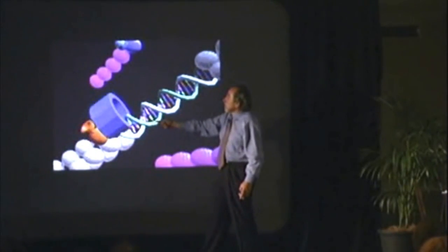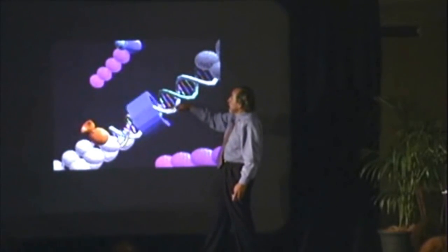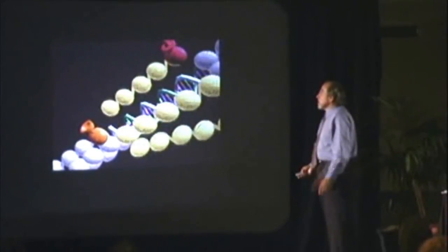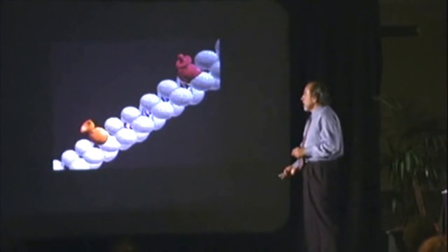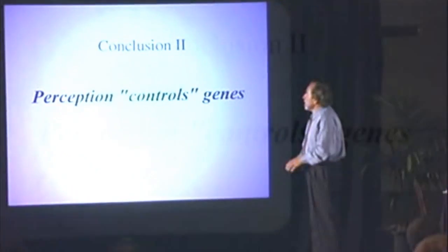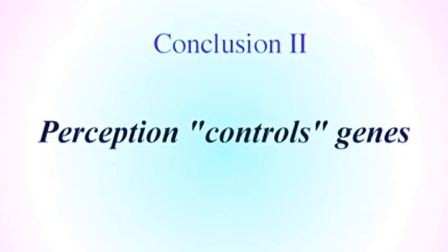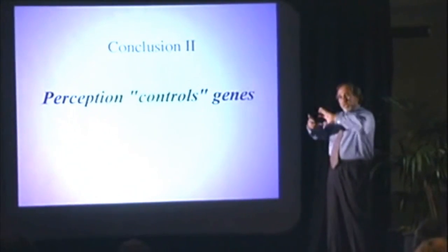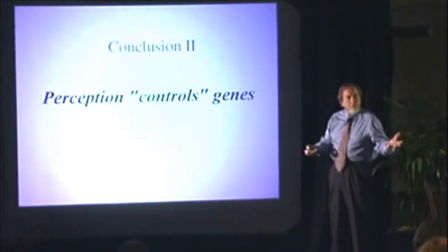Once the gene is exposed, a copy of it called RNA is made, and this goes out into the cell and is used for the function and behavior of the cell. So what is the conclusion? Perception controls genes. The genes did not control themselves. The perception was the signal that caused the sleeve of the DNA to come off.